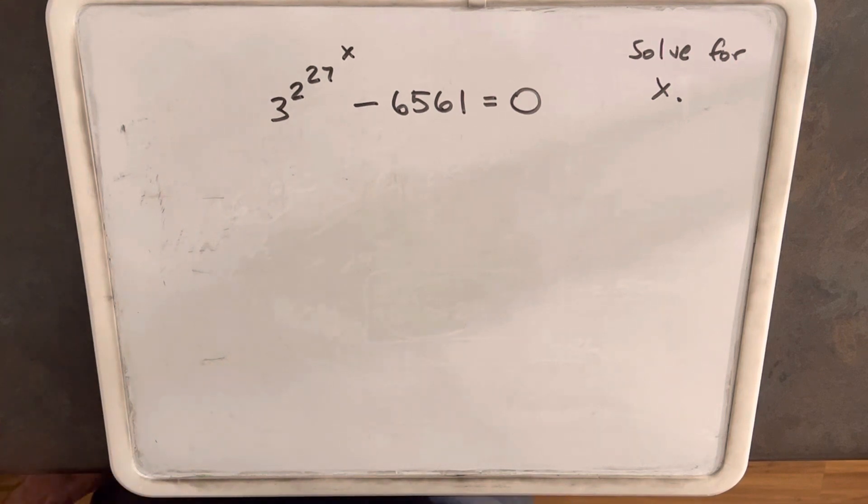We have an interesting problem on the board. We have 3 to the 2 to the 27 to the x minus 6561 equals 0.